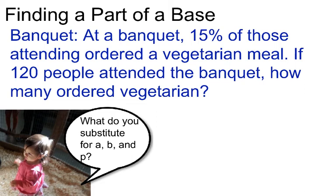In this problem, we are finding part of a base. Banquet: At a banquet, 15% of those attending ordered a vegetarian meal. If 120 people attended the banquet, how many ordered vegetarian? So the question to ask yourself is, what do you substitute for A, B, and P?